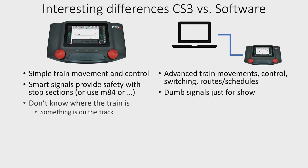Another interesting difference is that the Central Station 3 truly doesn't understand where the train is. It understands that there's something on the track through the sensors, and sensors come in various types. But true for pretty much all sensors is that they can just detect there's a train on a certain section of track. They don't know which train it is — it just knows there's something on the track.